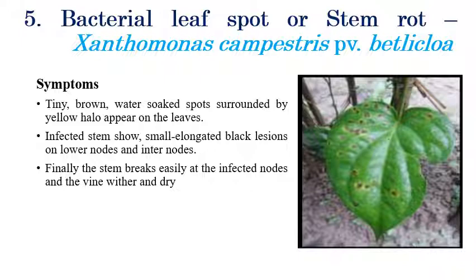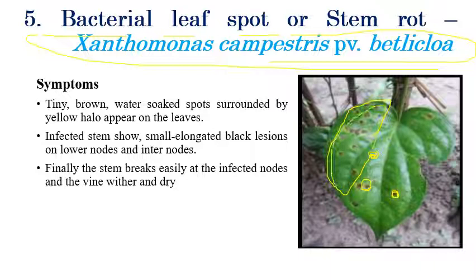Coming to bacterial leaf spot or stem rot, which is caused by Xanthomonas campestris pv. betelicola. Initially, small brown water-soaked spots appear, surrounded by a yellow halo. In later stages, shortening of internodes can be observed, along with stems slowly starting to break, girdling of vines, and drying of leaves and stems, especially of the vines.